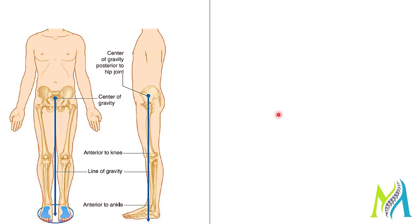The main function of the lower limb is to support the weight of the body with minimal expenditure of energy. When you stand erect, the center of gravity is anterior to the edge of sacral vertebra number 2 — S2. This vertical line through the center of gravity is slightly posterior to the hip joint.